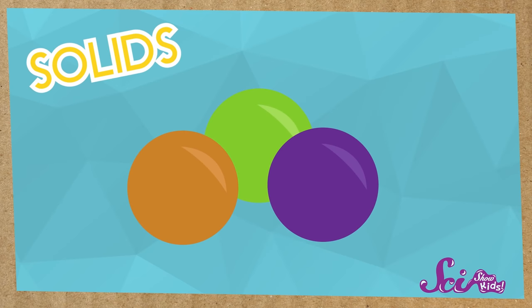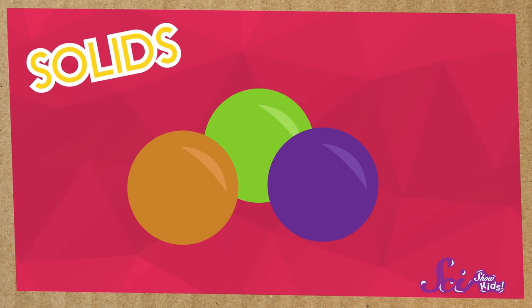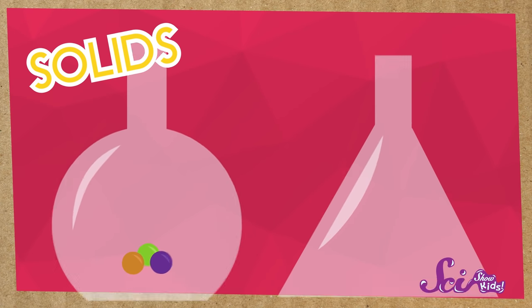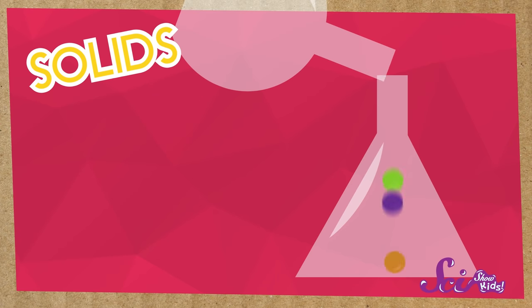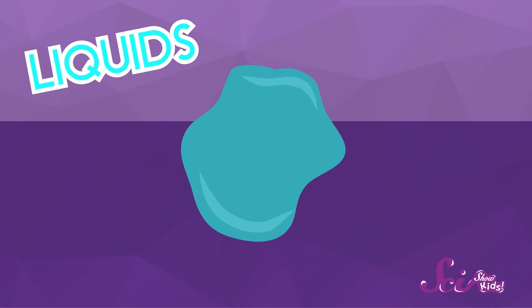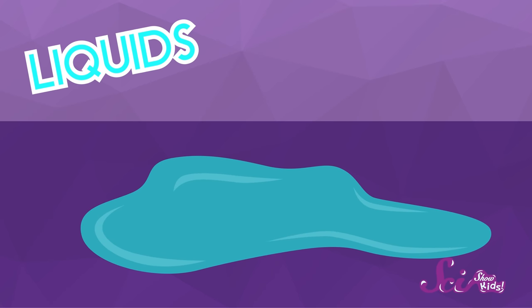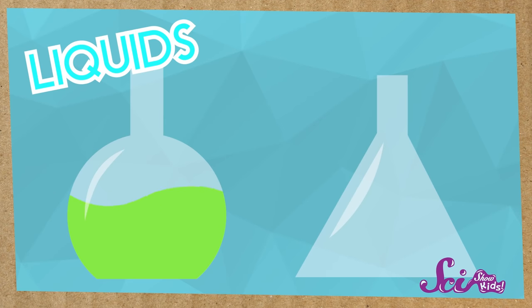So how are solids different from liquids? Well, things that are solid have a definite size and shape. If you touch it, or move it, or take it from one kind of container into another, it'll stay the same shape as before. But liquids are things that don't have a definite size or shape, like water. If you touch it, it moves. And if you move it from one kind of container into another, it changes its shape to fit the new container.